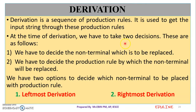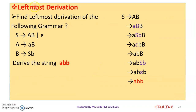Next is Derivation. This is the second module. Derivation uses a production rule. We can derive strings using production rules applied to non-terminals. We will consider two cases: left-most derivation and right-most derivation.